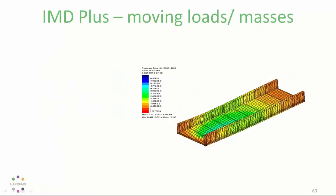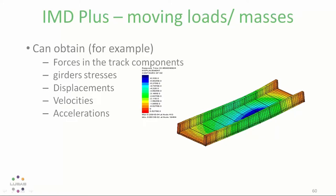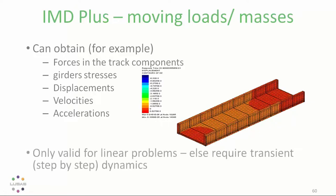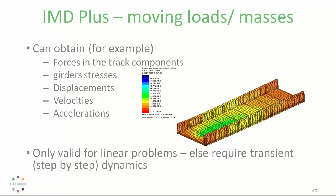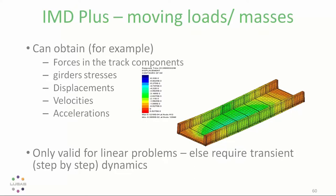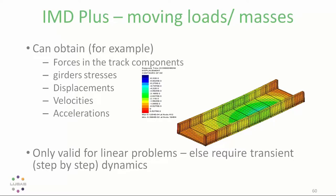From the model, you can obtain, for example, forces in the track components, stress, girder stresses, displacements, velocities and accelerations. And it's valid for a linear response, but also useful in finding out about critical speeds and train configurations in nonlinear structures.